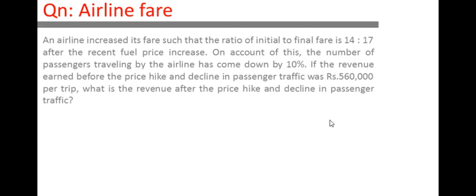Let us start. The question is: an airline increases its fare such that the ratio of initial to final fare is 14:17. So the initial fare is rupees 14 and it increased to a final fare of 17. You can say earlier the airline fare was 14, now it is 17 because of the recent fuel price increase.